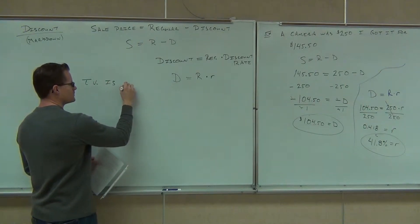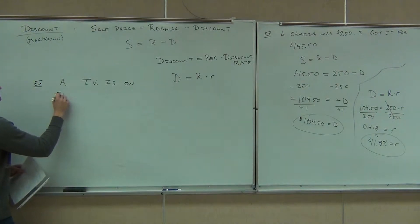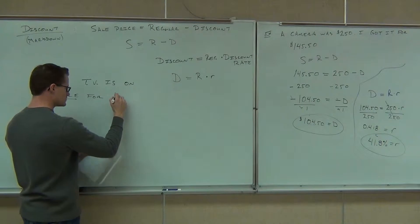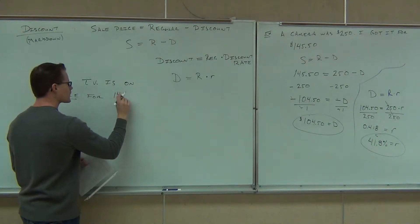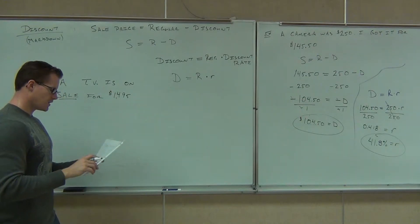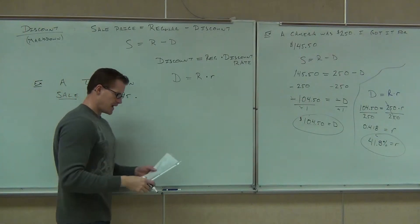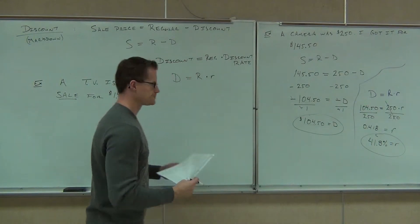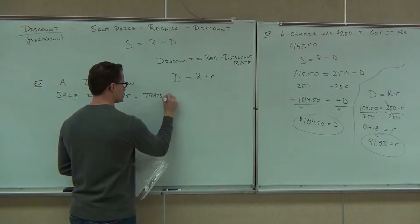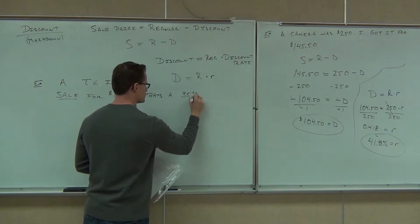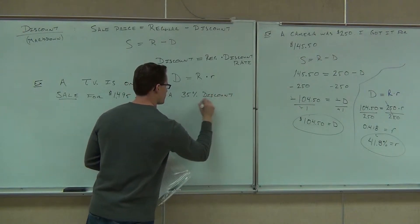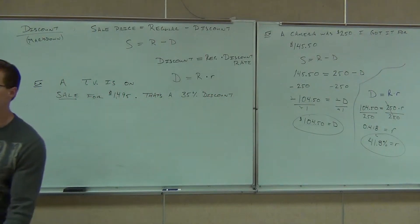A TV is on sale for $1,495, and they're telling you that that's a 35% discount. What we want to do is find the regular price.